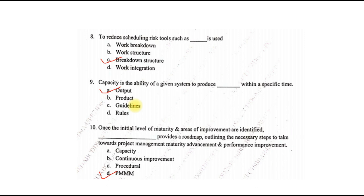The tenth MCQ: once the initial level of maturity and areas of improvements are identified, PMMM provides a roadmap outlining the necessary steps to take toward project management maturity, advancement and performance improvement. So those were the MCQs from the April 2023 paper.